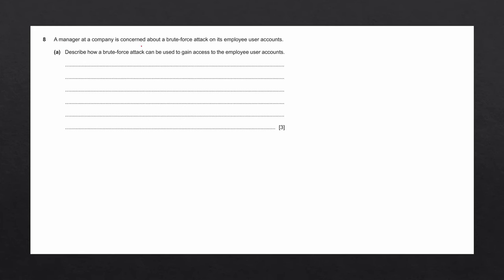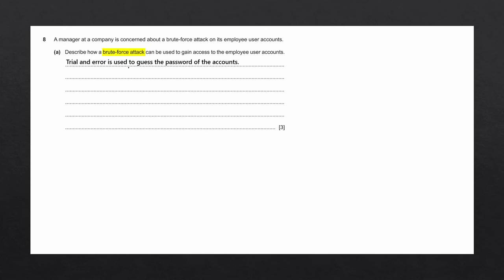Question 8. A manager is concerned about a brute force attack on employee user accounts. Question A asks to describe how a brute force attack can gain access to the accounts. A brute force attack uses trial and error to systematically guess login information or encryption keys — entering many passwords or passphrases until the correct one is found. For three marks: trial and error is used to guess the password; all possible combinations are tried until the correct password is found; and this process can be done manually or automatically using a system.